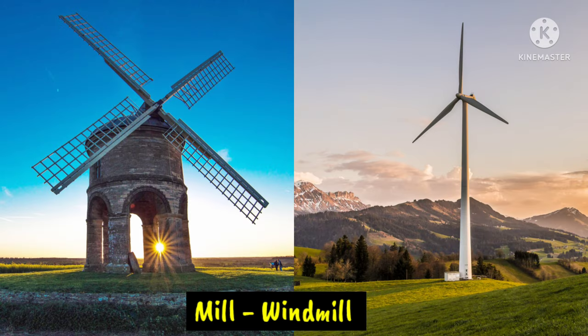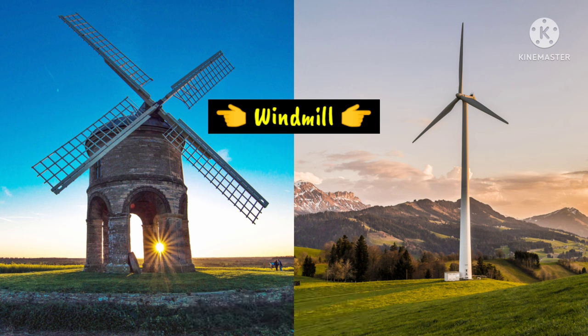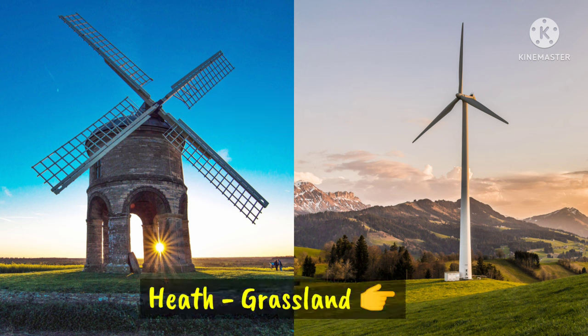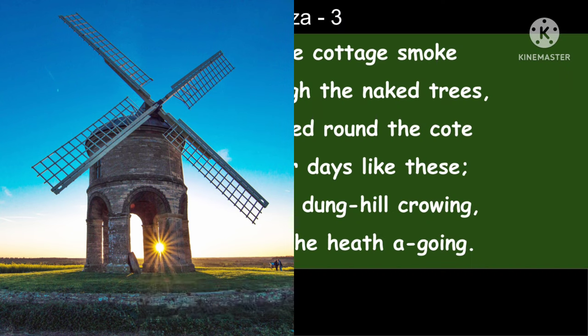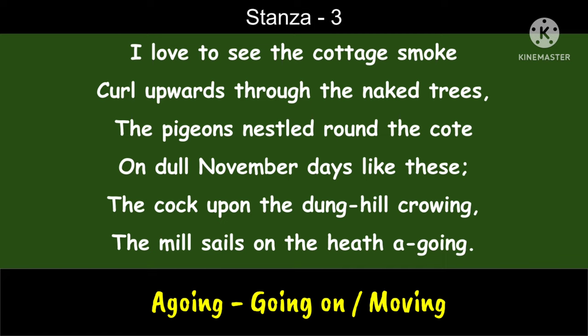Here mill refers to the windmill. In England there are many windmills that produce energy from wind. The windmills are located on the heath. Heath means grassland — land covered with grass. These mill sails are 'a-going,' meaning going on — the mill is moving.